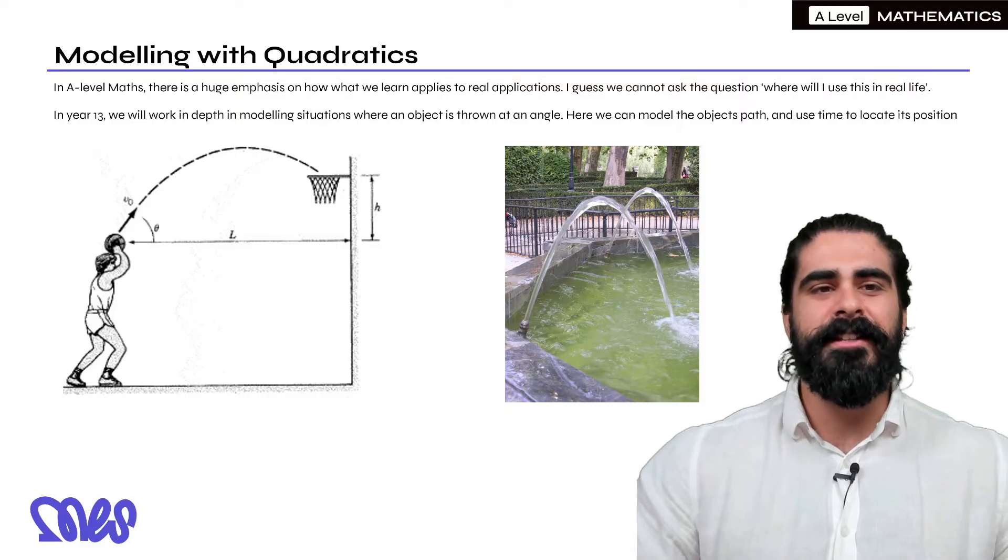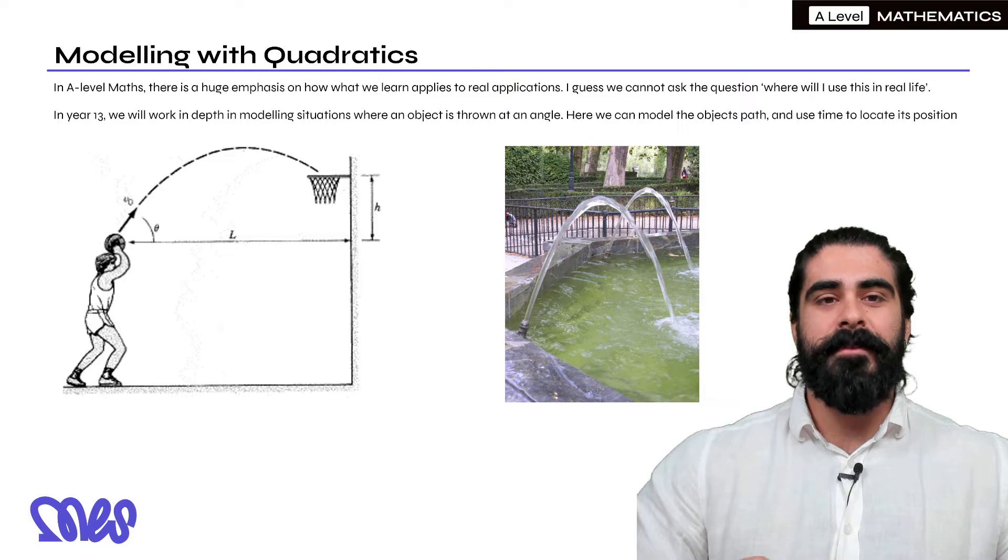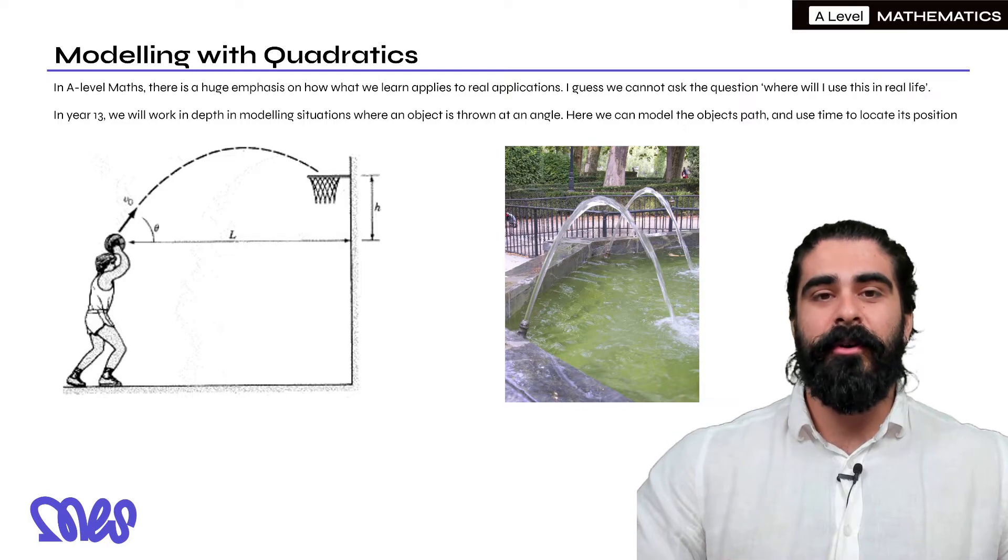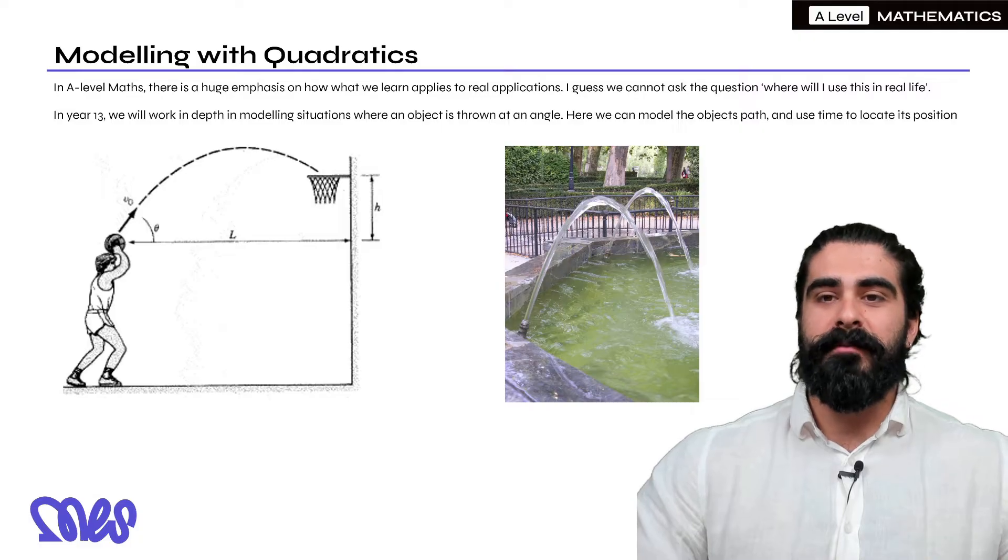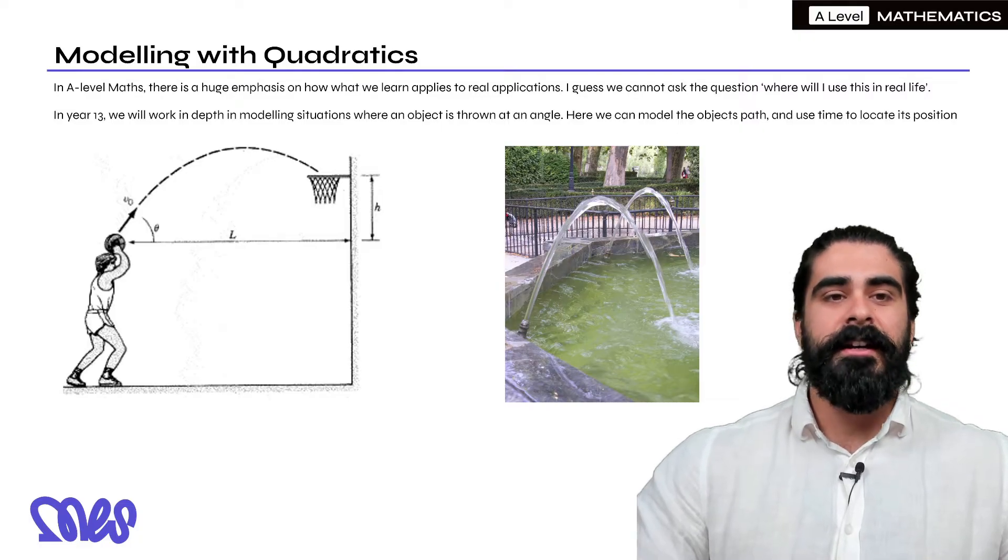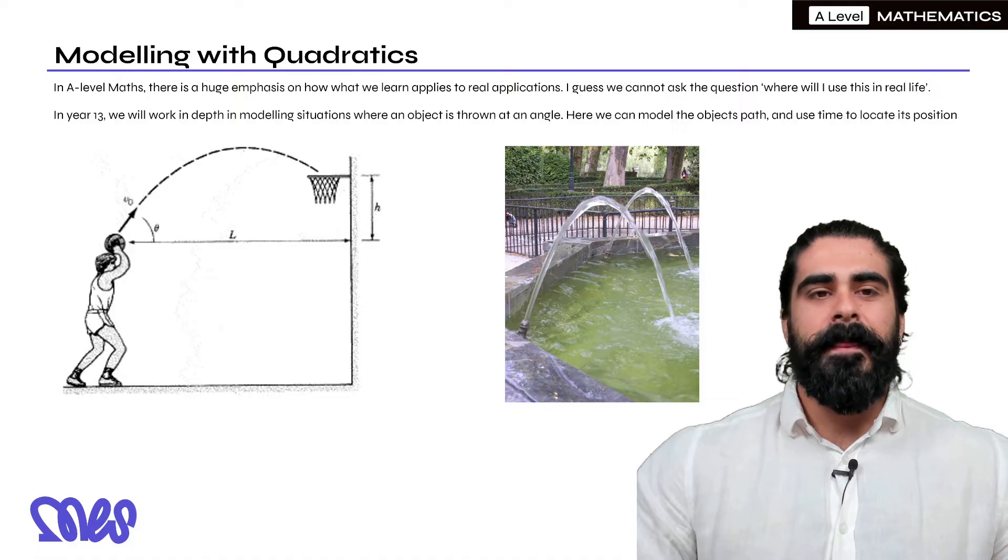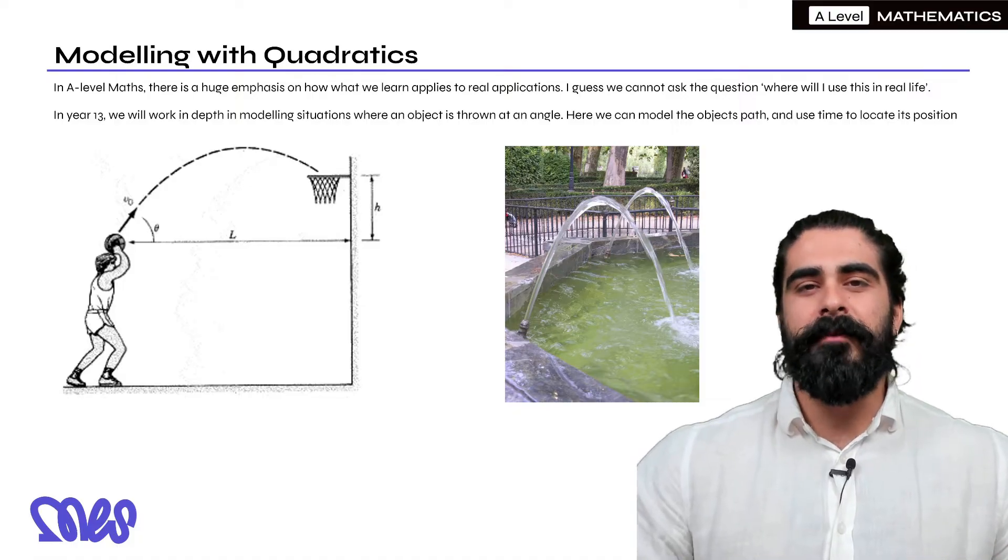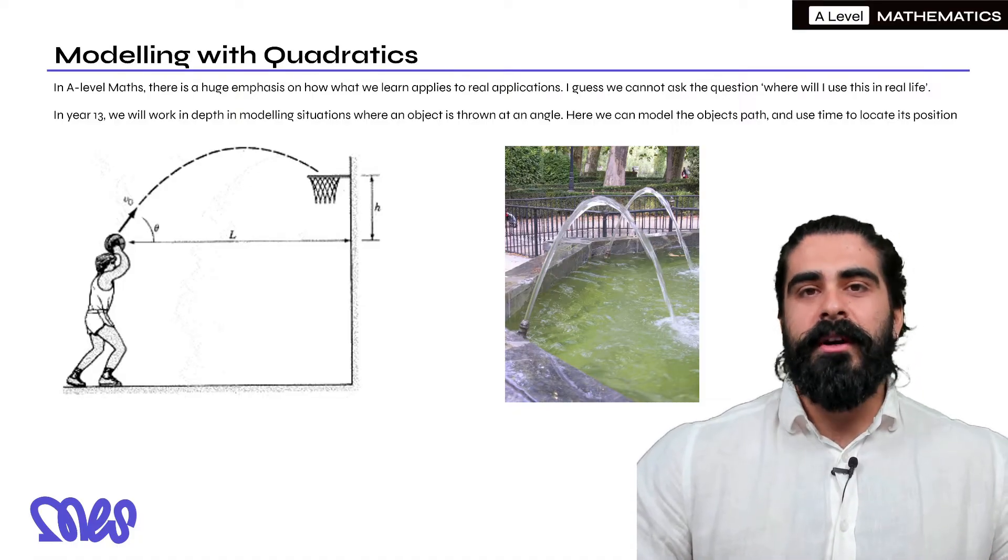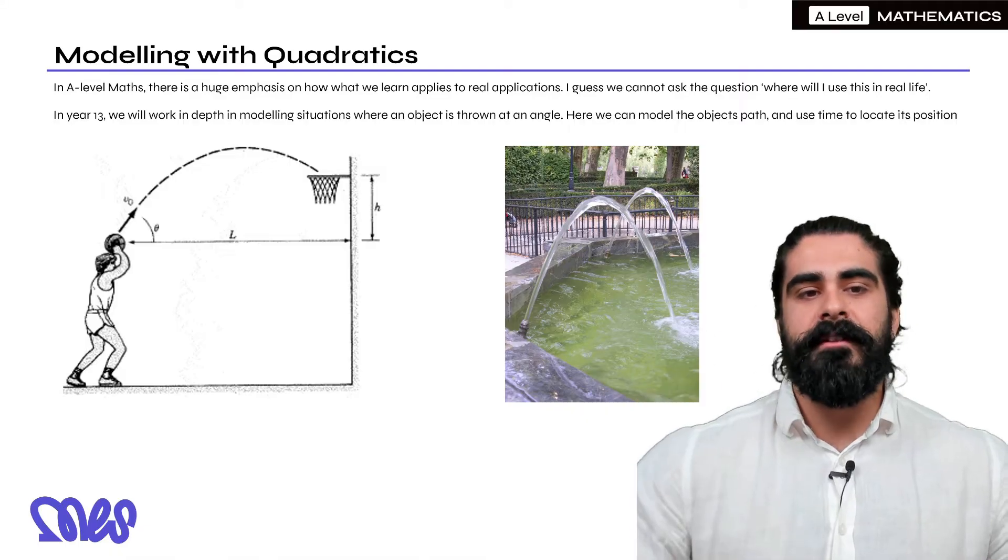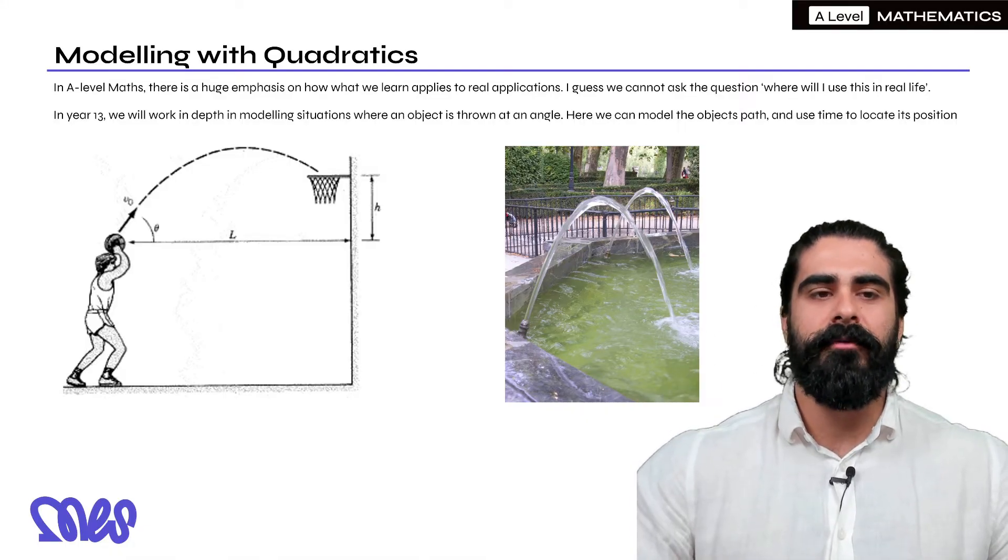But since we're older now and we respect the subject a lot more it's asked much less. Now in year 13 we will work in depth in modelling situations where an object is thrown at an angle. Here we can model the object's path and use time to locate its position. This is 2D projectiles. Even in year 12 we do a bit of this when we look at Suvat equations and movement under gravity but in year 13 we do it at a lot more depth.